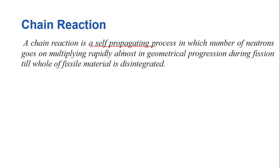So, what is the process? The neutrons get multiplied in geometric progression. If you multiply and multiply and multiply, the process continues. That is the chain reaction.